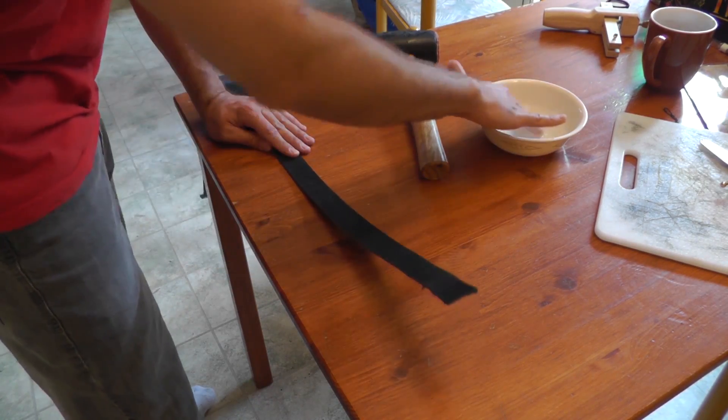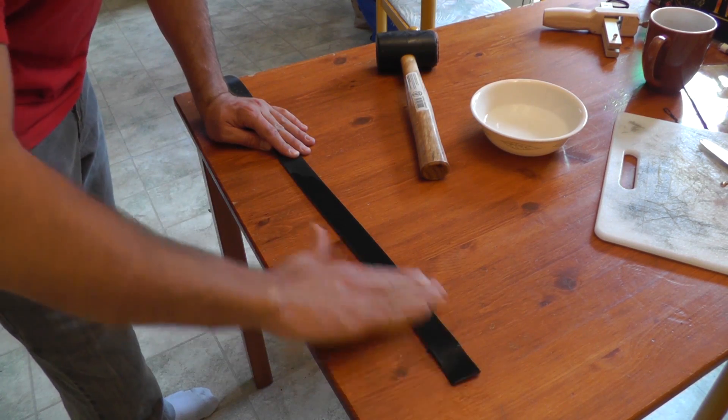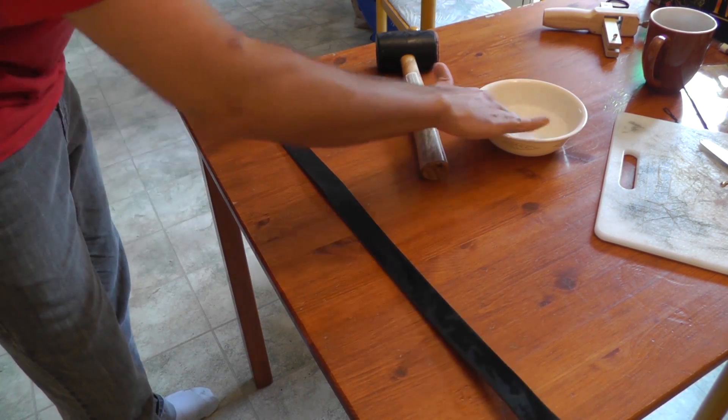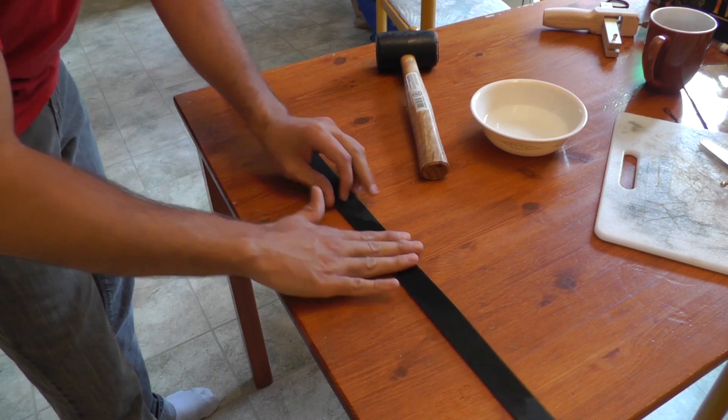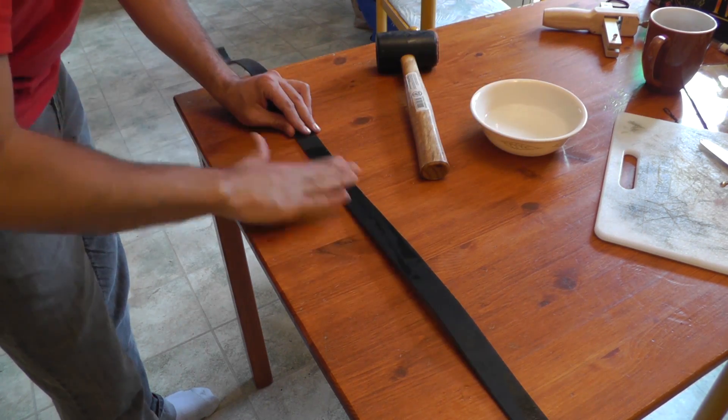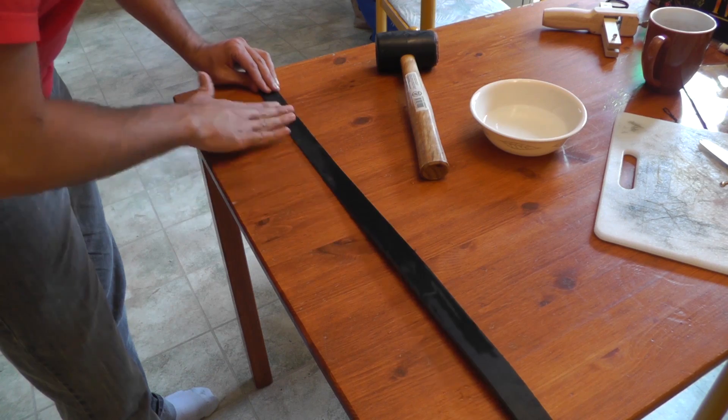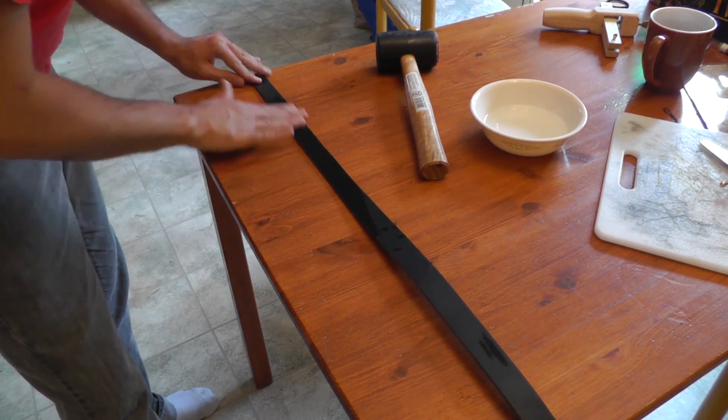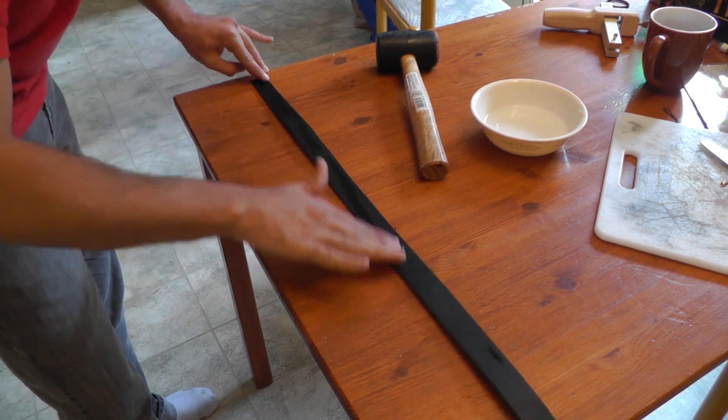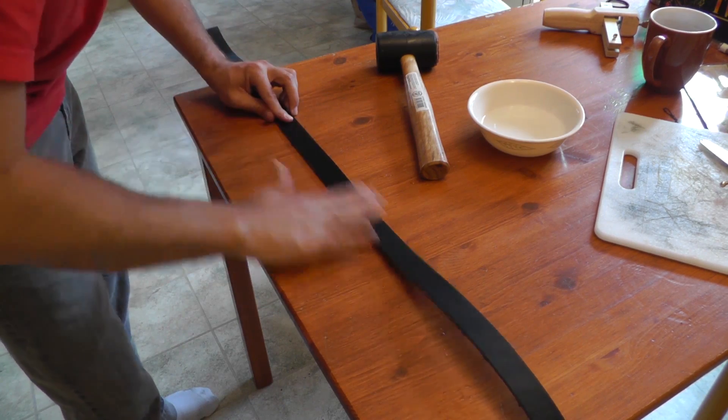The next thing you're going to want to do is wet the belt. This is if you want to do any sort of design. By wetting the belt you make the leather soft. Softer leather is easier to stamp if you wish to stamp, or carve if you wish to carve it. The design I'm going to put on this belt is going to be simple, but it's still going to involve stamping and a little bit of carving.